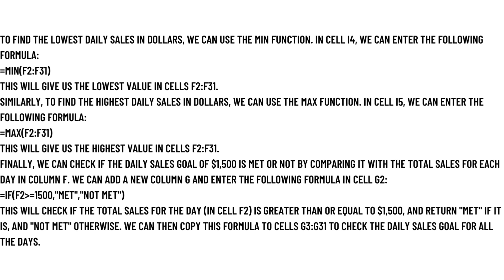So if we check whether the daily sales goal of $1,500 is met or not by comparing with the total sales of each day in column F, we can add a new column G and enter an IF formula in G2. This formula checks if the total sales of the day is greater than or equal to $1,500 and returns 'Met'; otherwise it returns 'Not Met'. We can then copy the formula to cells G3 through G31 to check the daily sales goals for all days.